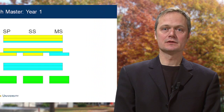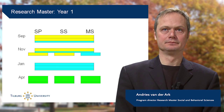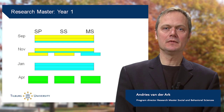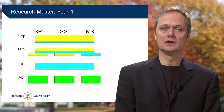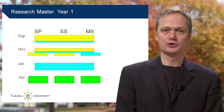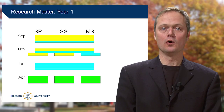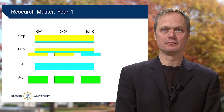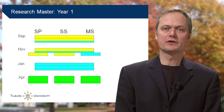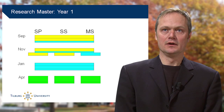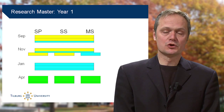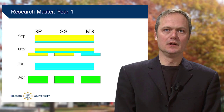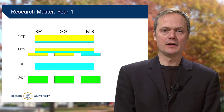The Research Master in Social and Behavioral Sciences is a two-year program. At the start of the program, students choose one of three minors: Social Psychology, Sociology, or Methodology and Statistics. If you do not yet know your preferred minor, or if you want to switch minor, don't worry — you can change your minor along the way.